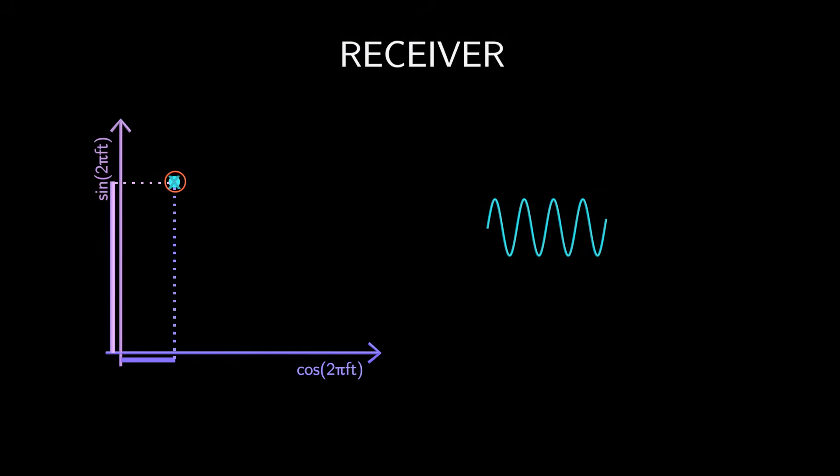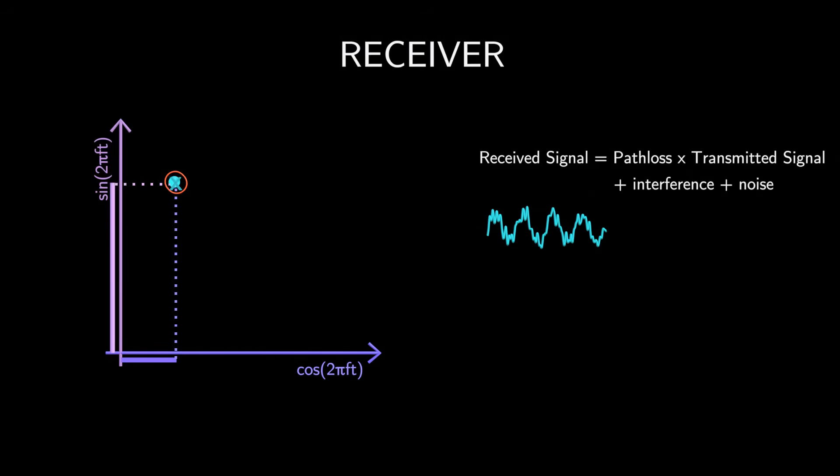The received signal gets weaker due to path loss, which reduces its amplitude. Plus, interference and noise can distort the signal, causing the received point to deviate from where it should be. If the receiver knew the exact amounts of path loss, interference, and noise, it could adjust the received point back to its original position.